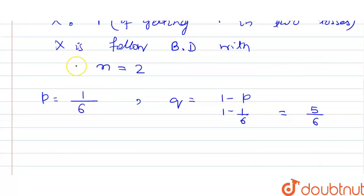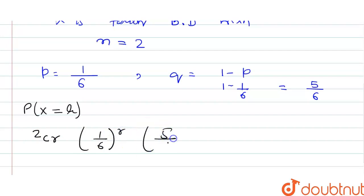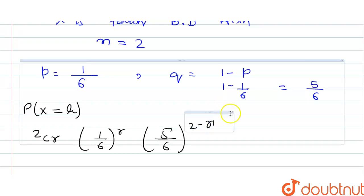We have to find the value of p x equal to r. That is, 2 c r, the value of p will be 1 by 6 to the power r. The value of q will be 5 by 6 to the power 2 minus r.